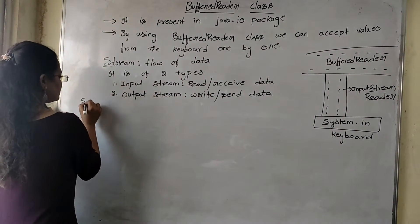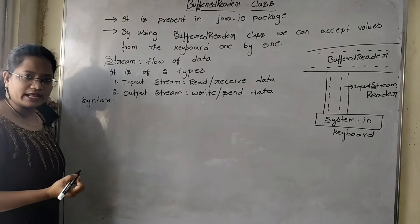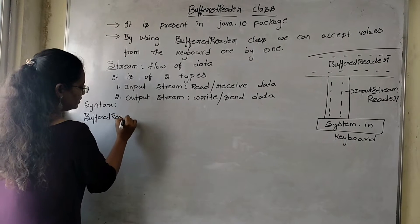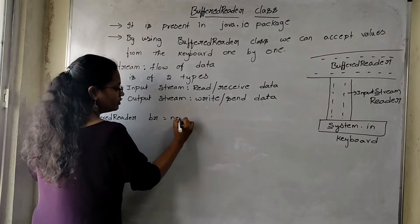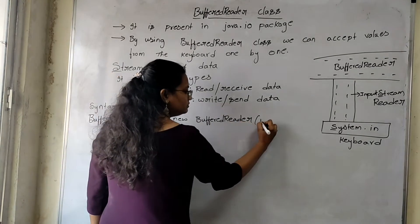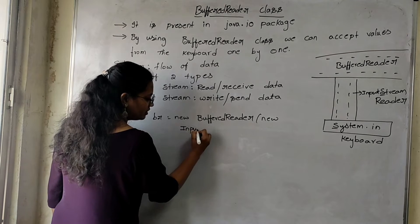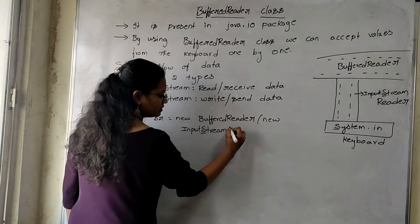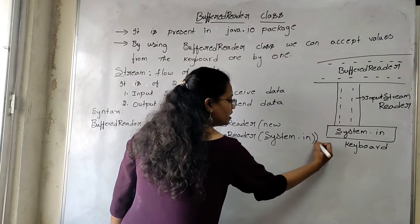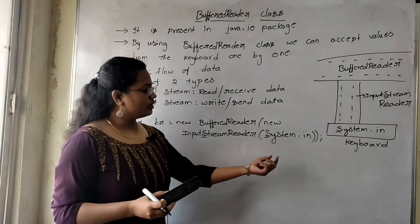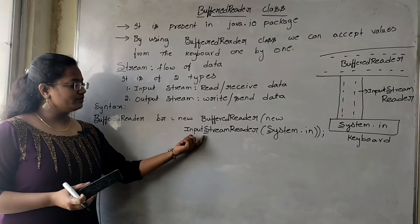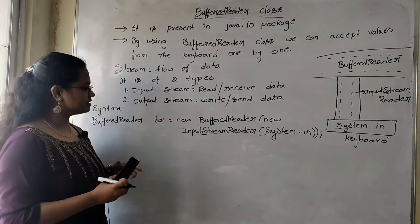Now, what is the syntax to represent BufferedReader Class? BufferedReader br = new BufferedReader(new InputStreamReader(System.in)). You are accepting your data by using System.in, then you are passing the data into the InputStreamReader. This InputStreamReader can send that data to the BufferedReader object. This is the syntax.